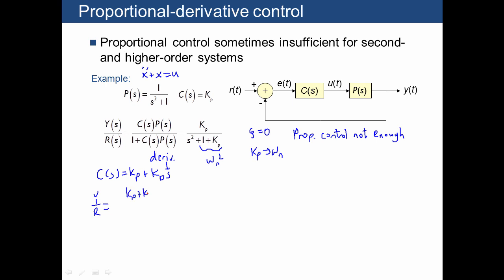Which will be kp plus kd s divided by s squared plus 1 divided by that 1 plus the same quantity. If we multiply top and bottom by s squared plus 1, here's what we get.